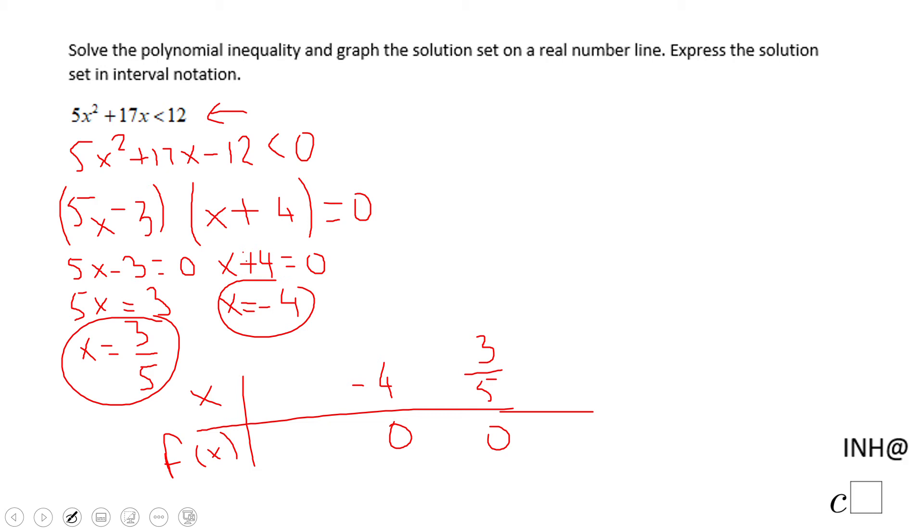Now I want to just see how the sign behaves in this table. I'm going to take zero as an initial value, and if I plug zero here in this factor form, I'm going to get -3 here, right? Because 5 times 0 is 0, so just -3. And this one is going to be positive 4. Whenever you multiply a negative and a positive you get a negative, so that's the reason I'm going to put here a negative. Zero is between -4 and 3/5.